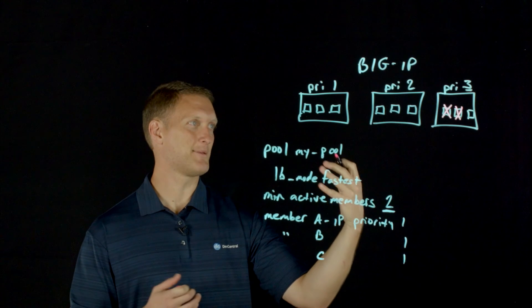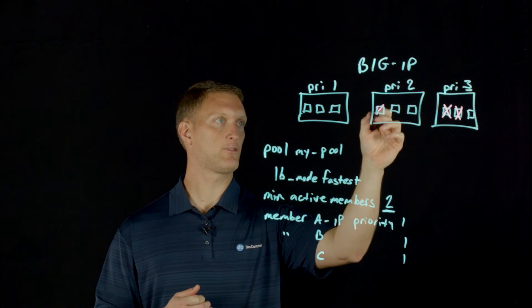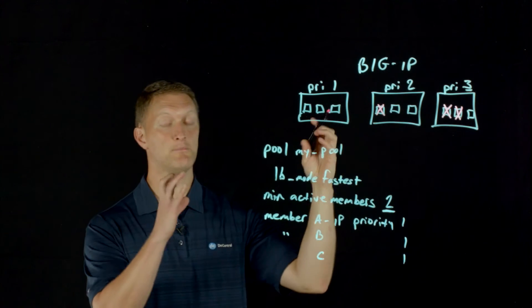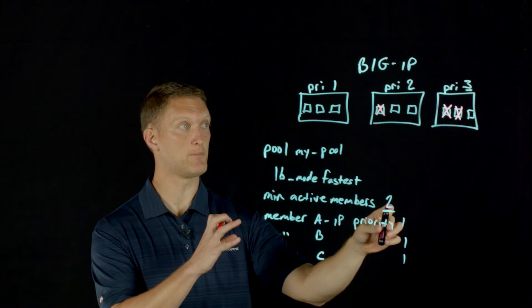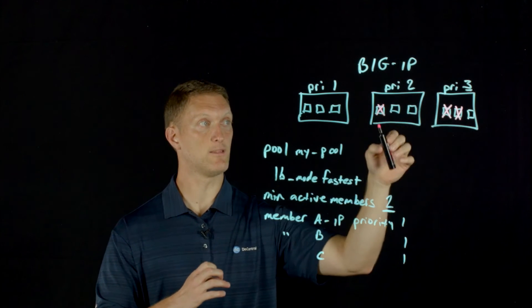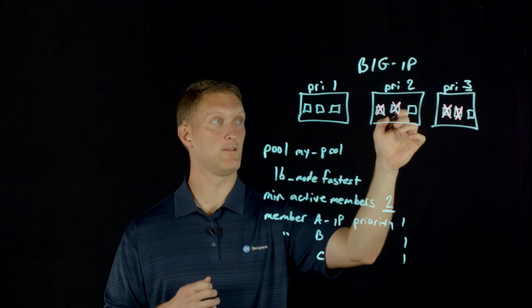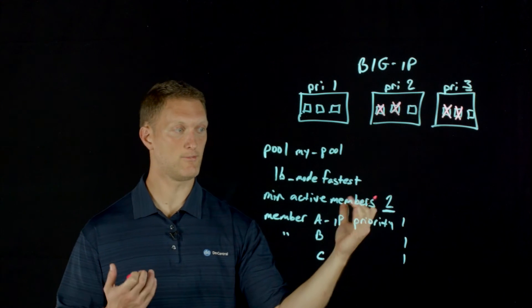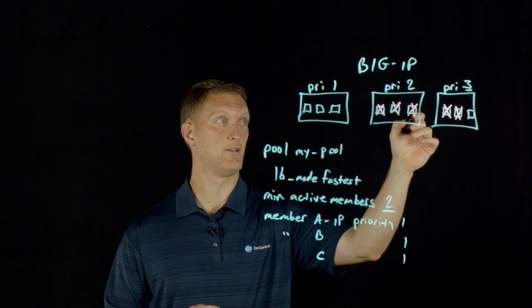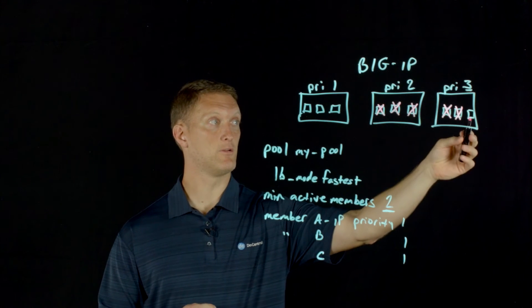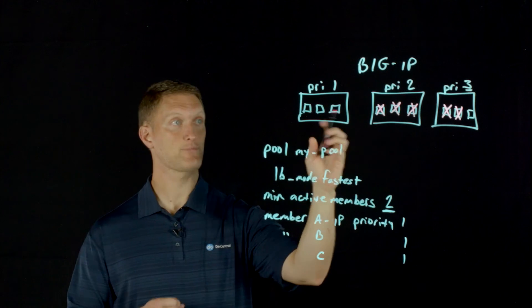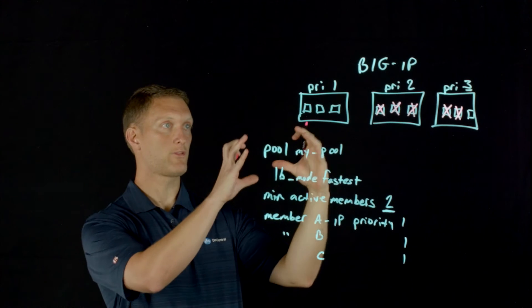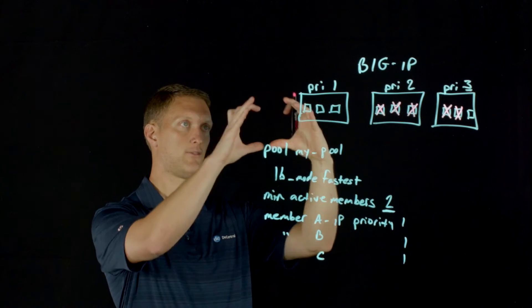Let's step through a couple more scenarios. If one member in priority group two goes down, priority group three's remaining member still gets traffic, and the two remaining in priority two also get traffic — three members total, still above the minimum of two. If another one in priority two goes down, those two remaining members get all the traffic. If one more goes down, suddenly there's only one in that active group, so we have to activate priority group one — now four members get traffic.